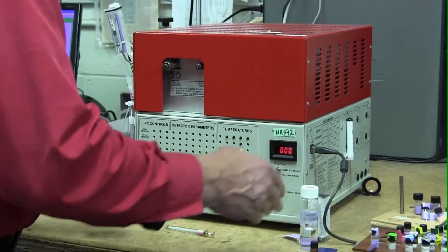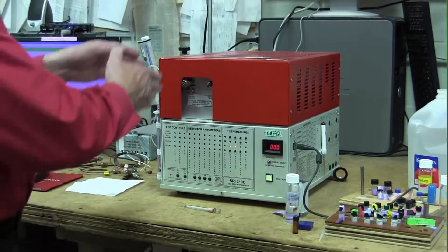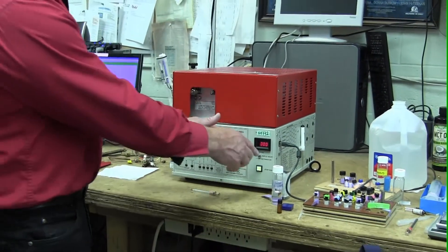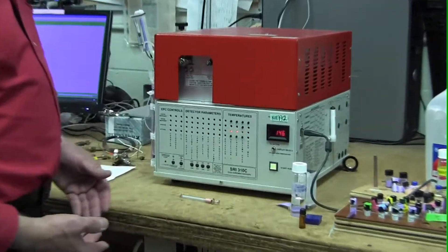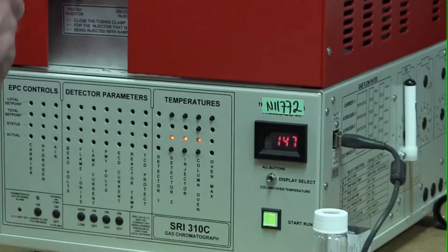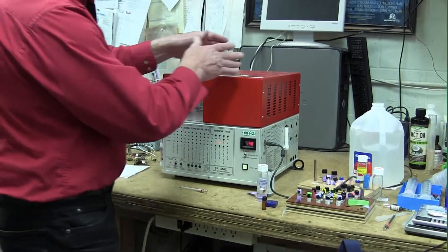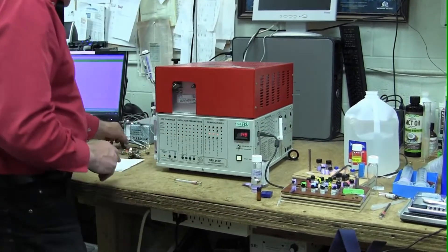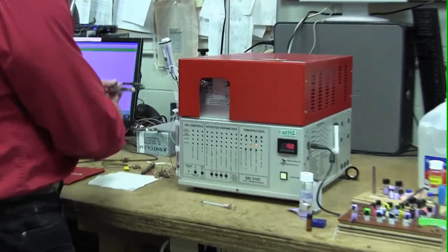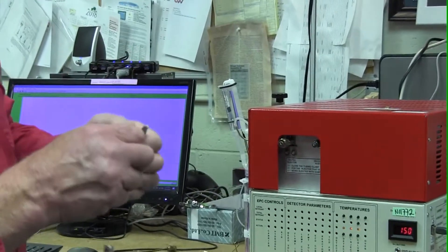It squirted the calibration standard that we made into the flowing stream of hydrogen, which is currently at 140-something degrees. And the molecules have evaporated and are being pushed by the hydrogen through the tube - a tube like this which is called a column.